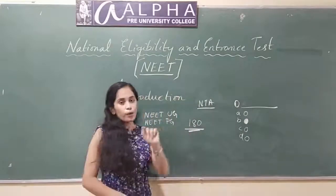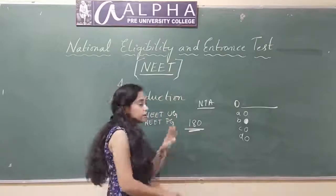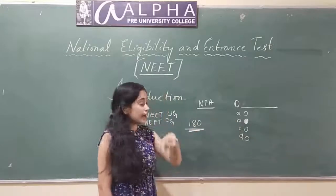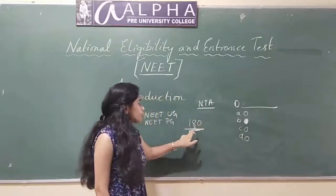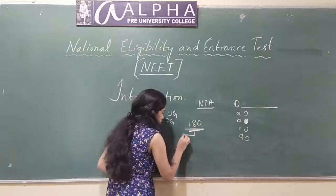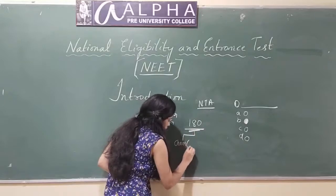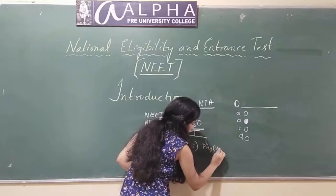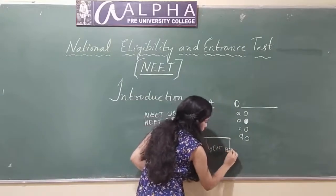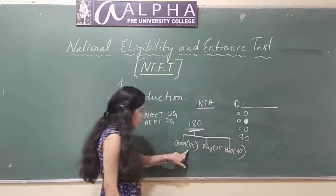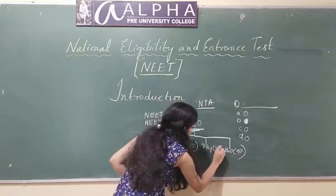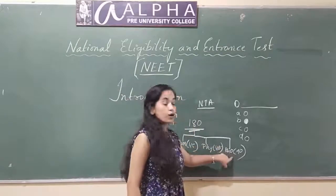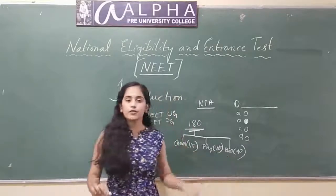As mentioned, there are 180 objective type questions with 4 options and you need to mark your answer on the OMR sheet. Out of these 180 questions, 45 questions are from chemistry, 45 from physics, and 90 from biology. In biology, 45 questions are from botany and 45 from zoology.